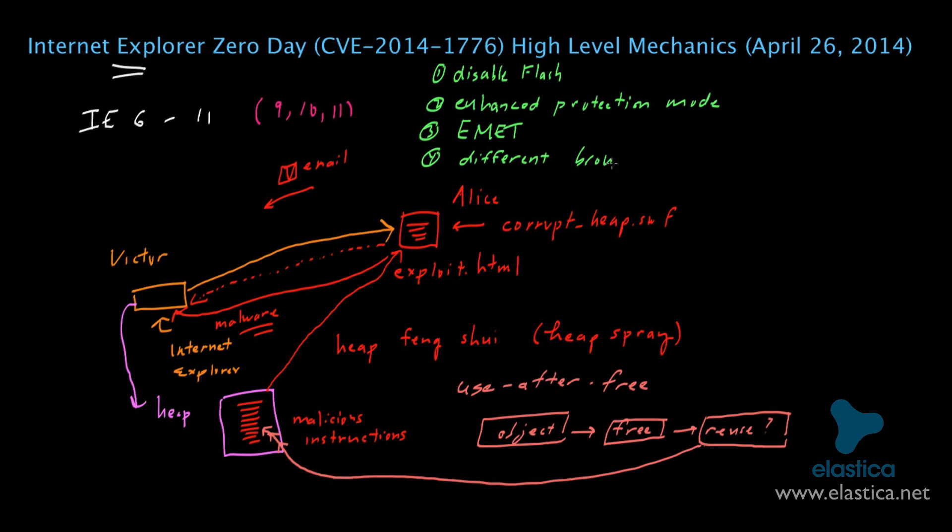I also want to stress two things that don't work here. First of all, there is a technique known as Data Execution Protection, also known as DEP. There's also a technique known as Address Space Layout Randomization, or ASLR. These techniques are useful in other security contexts, but it turns out that the way this particular attack is carried out, the approaches mentioned, DEP and ASLR, don't actually work in protecting against this type of particular attack.